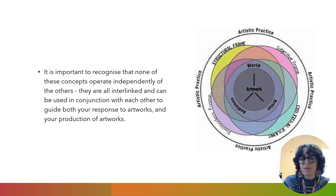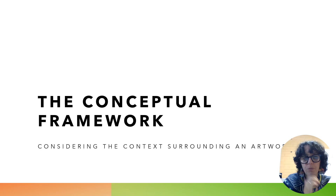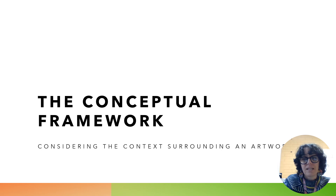Surrounding that artwork, we consider the artist, the world in which they create the artwork, and the audience that responds to their work. You can see through this complicated, overlapping series of circles that it all interrelates and interlinks — none of them are separate from each other. So the first one we're going to look at is the conceptual framework, which is really considering the context that surrounds an artwork. There are four different elements that we're going to look at, and you're going to need to take notes as we go along.